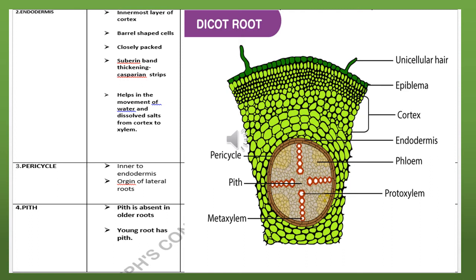The next layer is the pericycle. Next to the endodermis lies the pericycle — it is found inner to the endodermis. The function of the pericycle is that it originates the lateral roots.